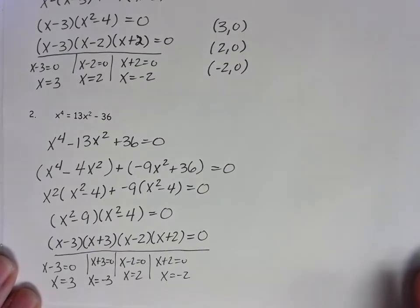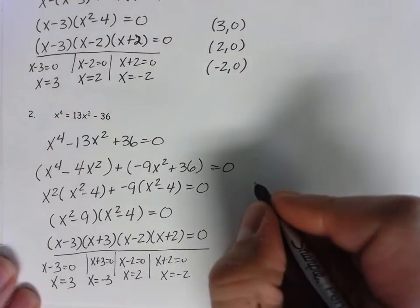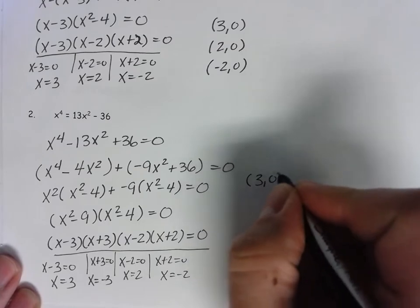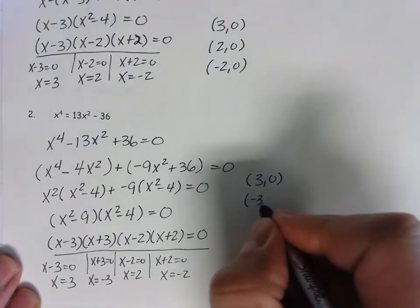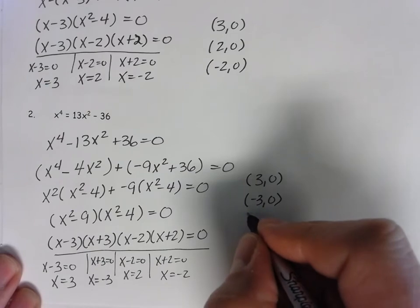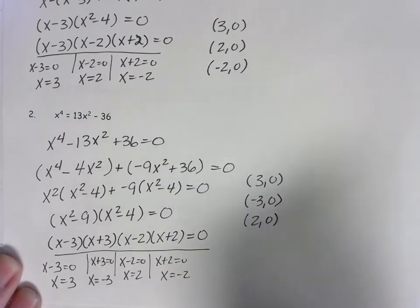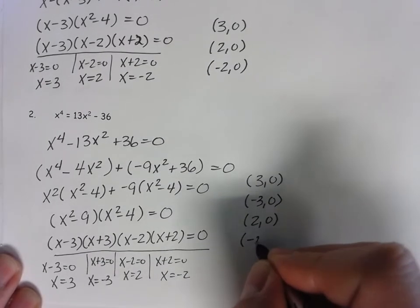All four roots being found. So the points are 3, 0, negative 3, 0, 2, 0, and negative 2, 0.